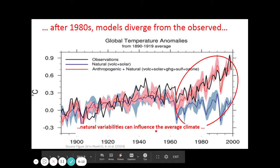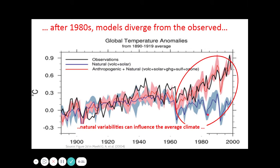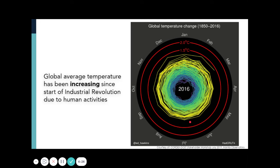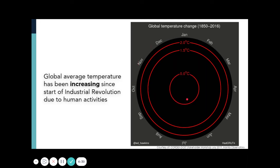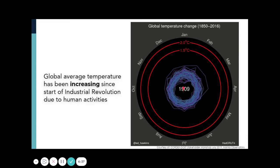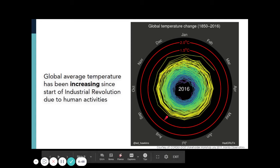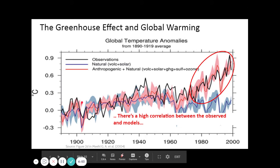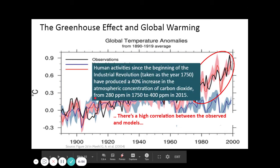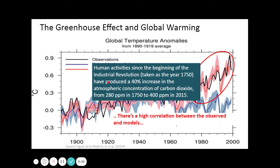Our next hypothesis asks: is it only natural variabilities, or is it also anthropogenic — human-induced global warming? This graph shows the observed temperature increase after the industrial revolution, and we can see that the average temperature has been increasing since then. This is unprecedented compared to prehistoric changes in global temperature, leading to the hypothesis that human activities since the industrial revolution caused this amplified global warming.